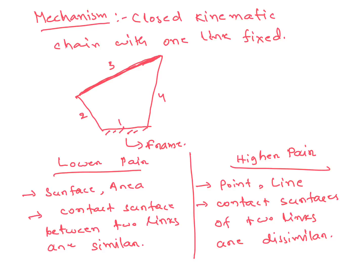In a lower pair, surface and area contact exist between the links, and the contact surfaces of the two links are similar. In a higher pair, point and line contact exist, and the contact surfaces of the two links are dissimilar.